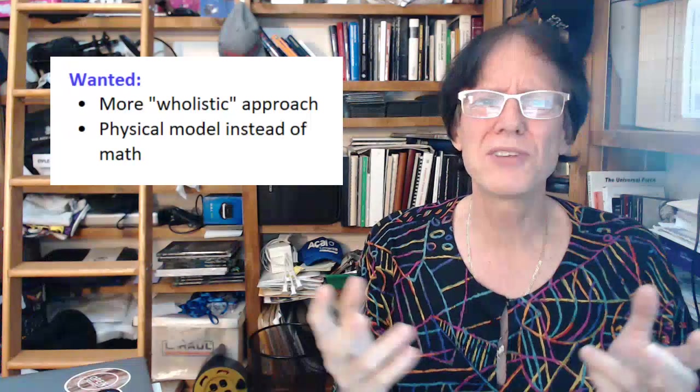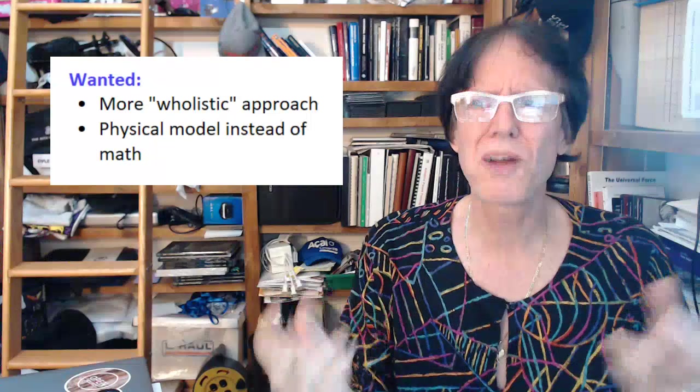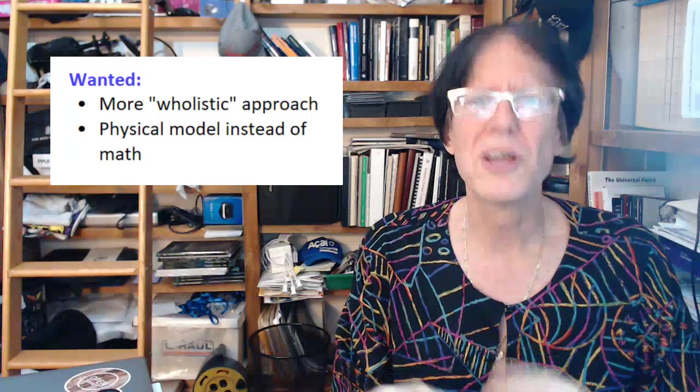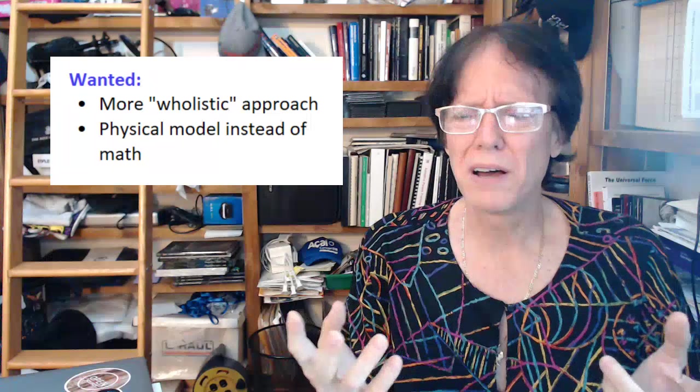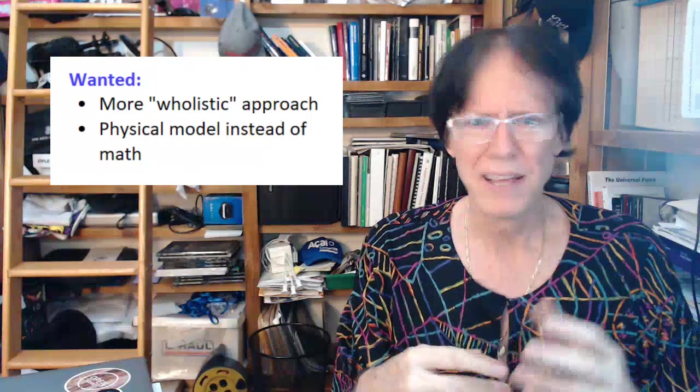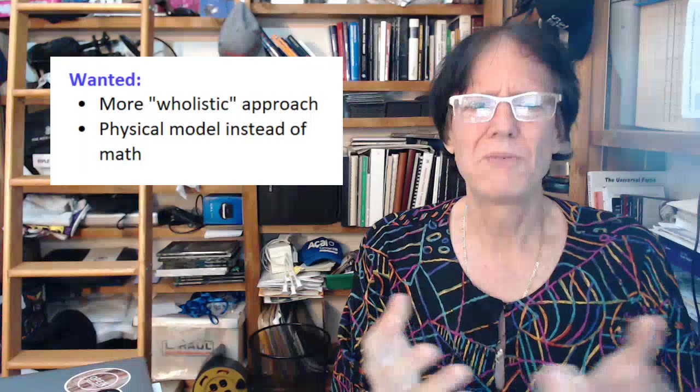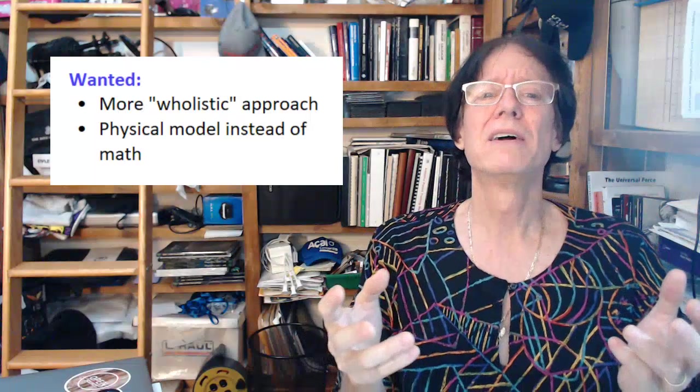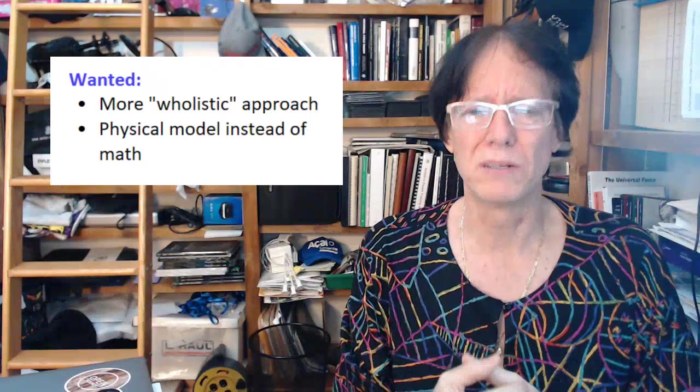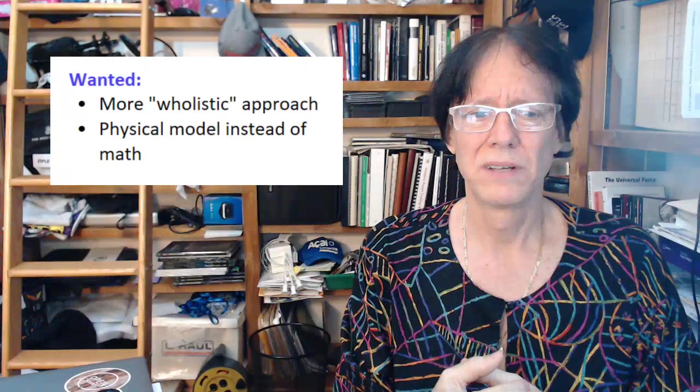Why don't we start with a model that says it's going to describe everything? It's going to describe gravity, light, magnetic and electric fields, subatomic structure and all that and how they all interact. It's going to do all that. We're going to do a more holistic approach. And not only that, we're going to make a physical model instead of a mathematical one. That's what's needed.